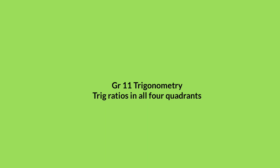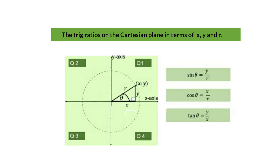Today's video discusses trig ratios in all four quadrants. In the previous video we defined the trig ratios for right angle triangles. Now in this video we are moving on to grade 11 trigonometry, moving away from the right angle triangle and onto the Cartesian plane.